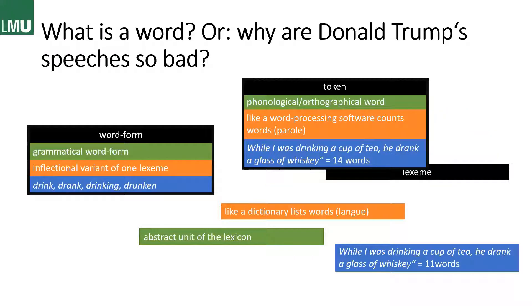The second thing we have to talk about are word forms, which is the grammatical category. We have inflectional variants of one lexeme — for example: drink, drank, drinking, drunken — they all go back to 'drink' and are all word forms of the verb 'drink.'